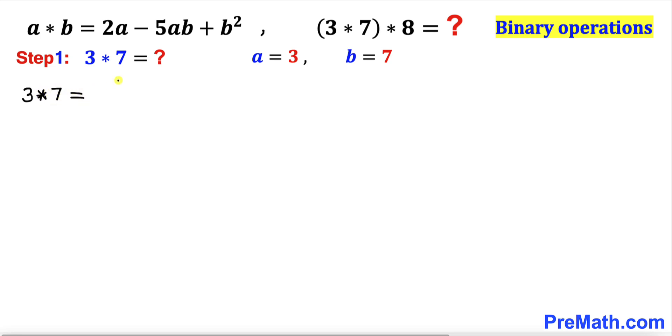So our 3 star 7 is going to be equal to, now we are going to plug in these a and b values over here. So that is going to give us 2 times 3 minus 5 times, in our case a is 3, b is 7, plus 7 squared.